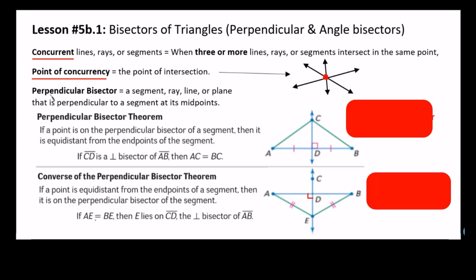Now let's talk about perpendicular bisector. Perpendicular means that it forms a 90-degree angle, and bisector means cuts right in the middle. So right here on this diagram, I have this line CD that is forming a 90-degree angle with segment AB, and it's cutting right in the middle because AD is the same as DB. So that means CD is the perpendicular bisector of AB. Remember, a perpendicular bisector could be a segment, a ray, a line, or a plane that is perpendicular to a segment at its midpoint.